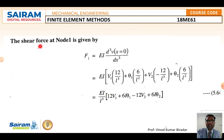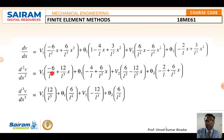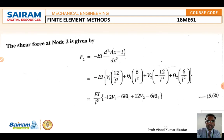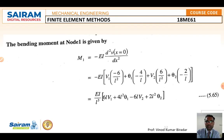Similarly, the bending moment at node 1 is M₁ = -EI·(d²v/dx²) at x = 0. Substituting d²v/dx² and simplifying yields the moment expression. The shear force at node 2 is F₂ = (EI/L³)(-12v₁ - 6L·theta₁ + 12v₂ - 6L·theta₂). All four equations — F₁, M₁, F₂, M₂ — are then written in matrix form.